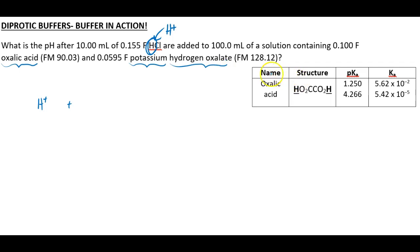So we're given information here in the appendix that we're always given. And what kind of a buffer is this? Is this a buffer containing H2A and HA minus, or is it a buffer containing HA minus and A minus 2?